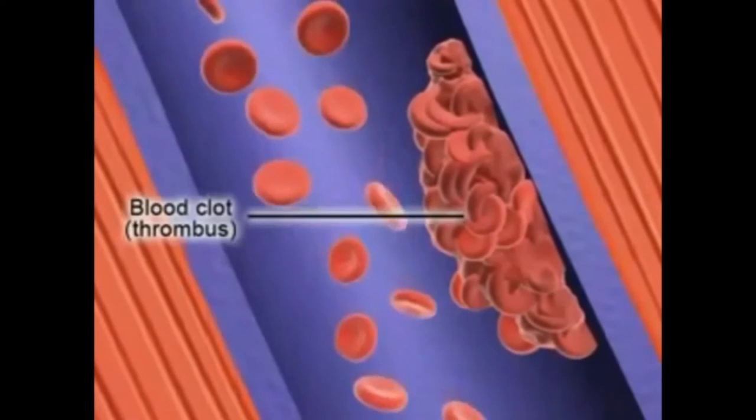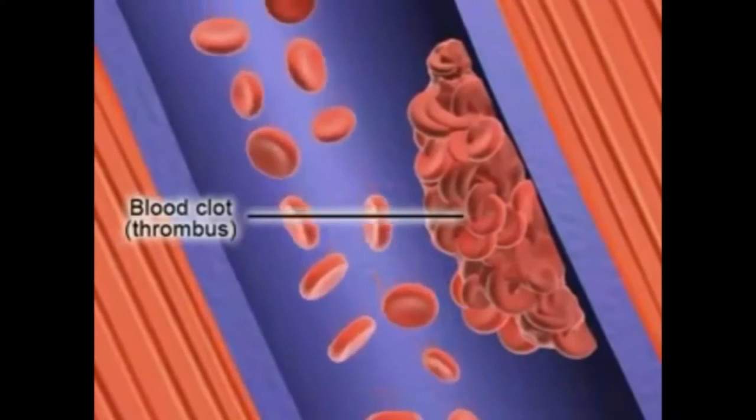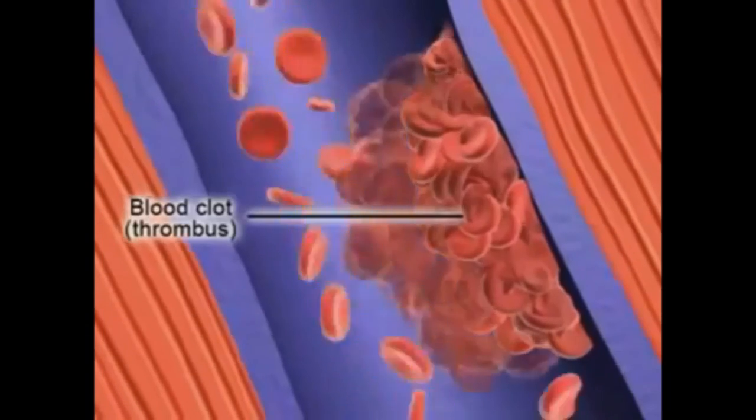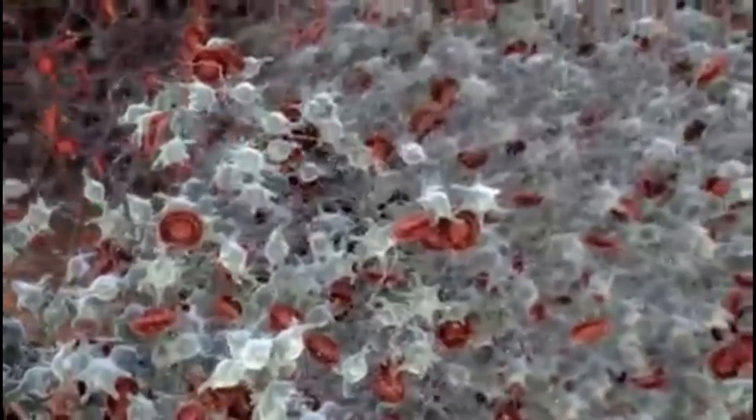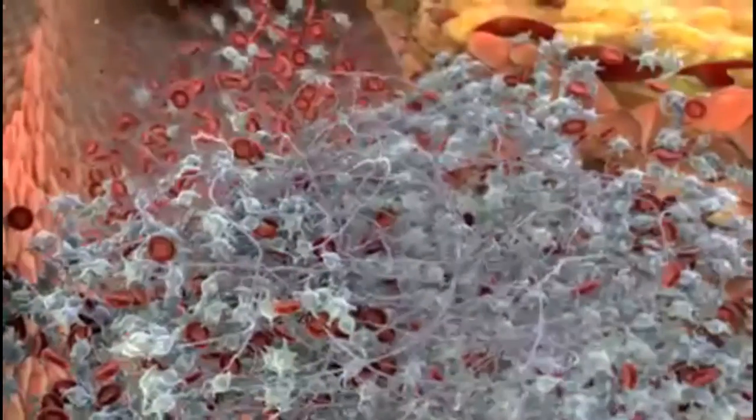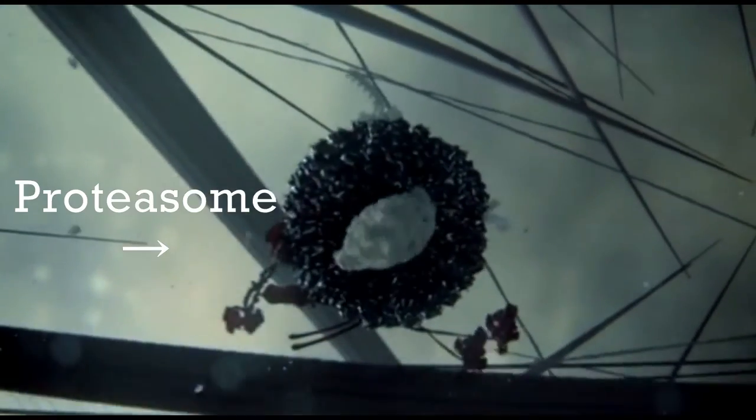However, the thrombus can still form without clotting factors, and so anticoagulants prevent a clot from getting larger. Anticoagulants are most often given alongside antiplatelet drugs, because while the platelets disperse, any clotting factors can stimulate the platelets to recombine. They take effect after 5-7 days, since existing factors need to break down first.